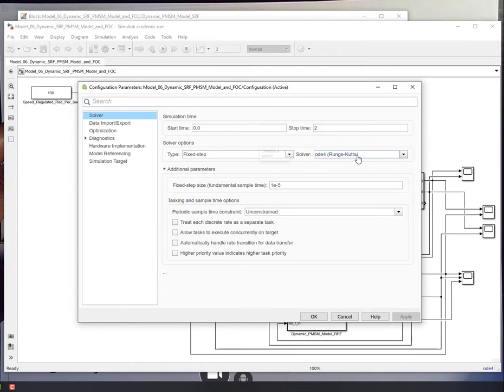So you're still running fixed step ODE4 Runge-Kutta method. And then I'm increasing the step size to 1E minus 5, because sometimes smaller steps, larger step size, tend to throw a convergence error at us. So I made it a little bit smaller, 10 times smaller.